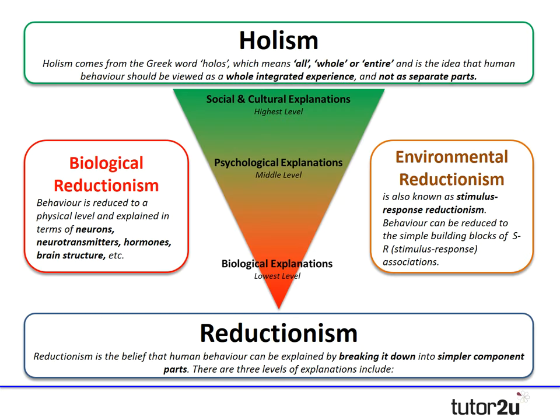All the definitions are now on screen. Reductionism is the belief that human behaviour can be explained by breaking it down into simpler parts, with three levels: biological at the bottom, psychological in the middle, and social/cultural at the top. Biological reductionism reduces behaviour to a physical level — neurons, neurotransmitters, hormones, brain structure. Environmental reductionism, also known as stimulus-response reductionism, reduces behaviour to stimulus-response links. Holism is the idea that human behaviour should be viewed as a whole integrated experience. Additional terms such as experimental reductionism and an interactionist approach are also worth knowing.